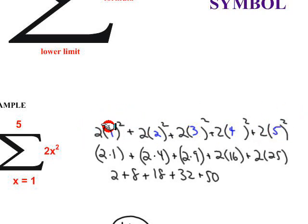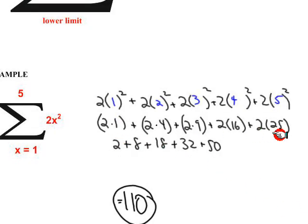The lower limit is 1, the upper limit is 5. So you start from 1, and you go up to 5, and you plug in the formula of 2x squared. As you can see, this person in our example worked everything out for us. That's 110.